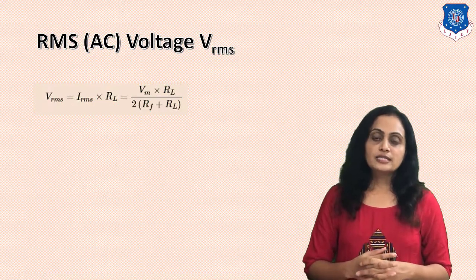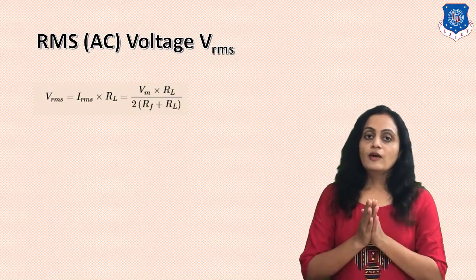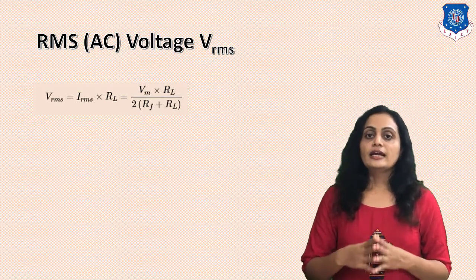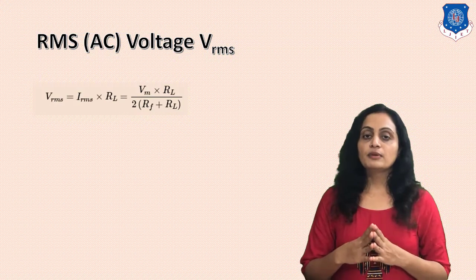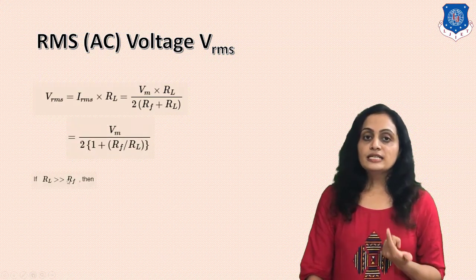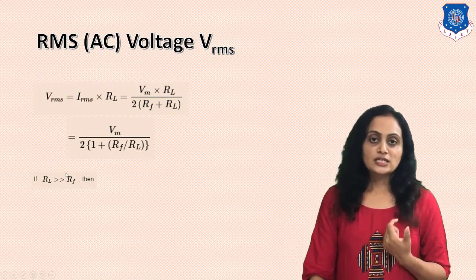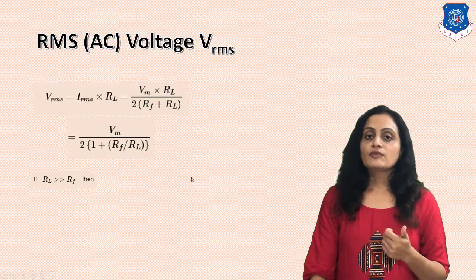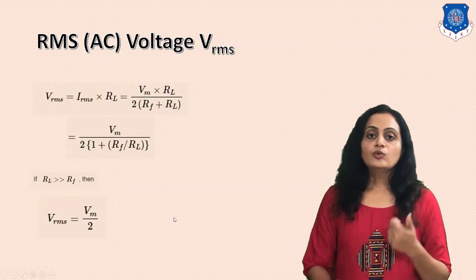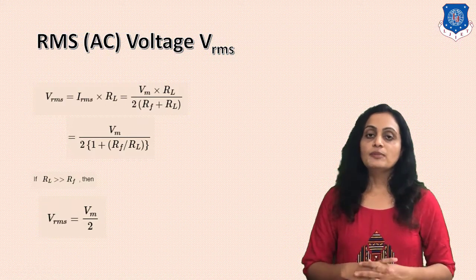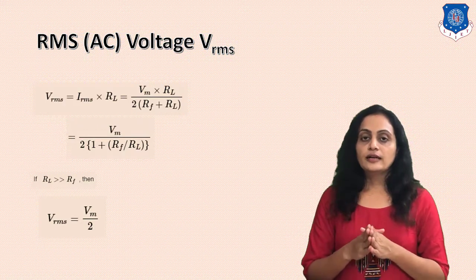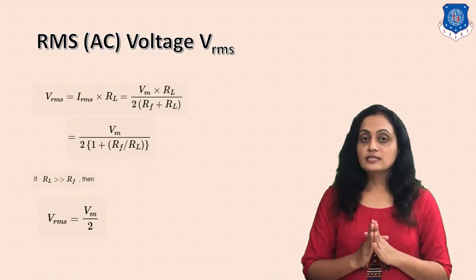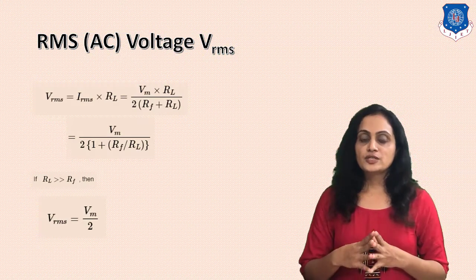Now we will find the RMS or AC voltage, Vrms = Irms × RL. Since Irms = Im/2 and Im = Vm/(RF + RL), and because RF is very small compared to RL we neglect it, the RMS voltage simplifies to Vrms = Vm/2. So we have calculated the average (DC) voltage and current values and the RMS (AC) voltage and current values, which are the very important parameters for the half wave rectifier.